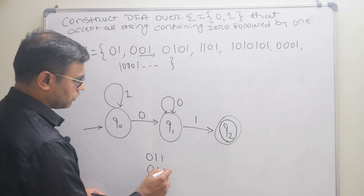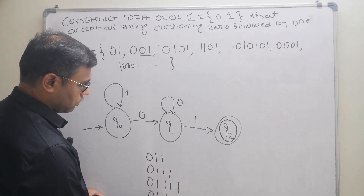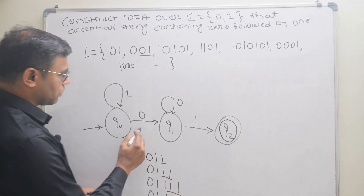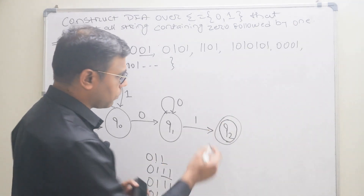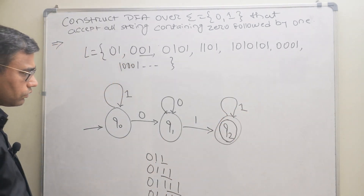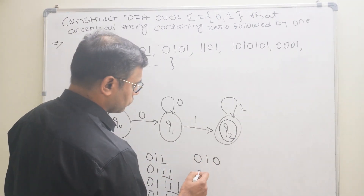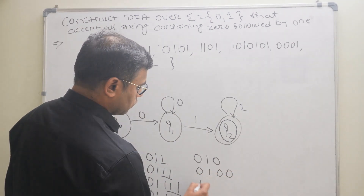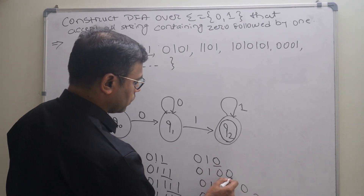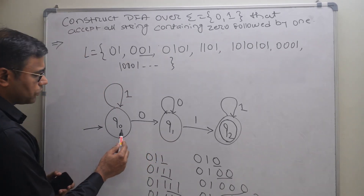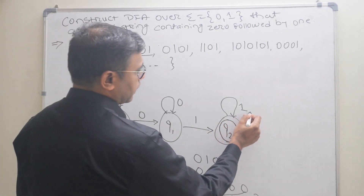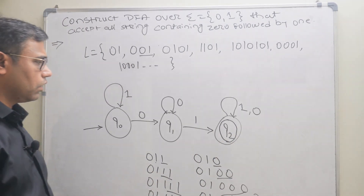Next, consider strings like 011, 0111, 01110 — the DFA should accept any number of ones after the substring 01. So we apply a self-loop of one at q2. Also, for strings ending with multiple zeros before one — like 010001 — once we are in q2, on zero we go back to q1, and a self-loop of zero at q1 handles multiple zeros.